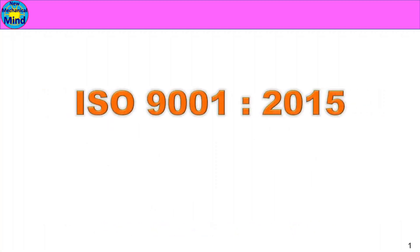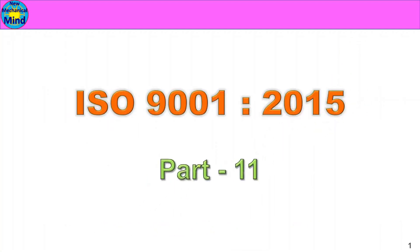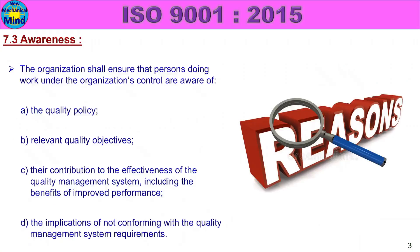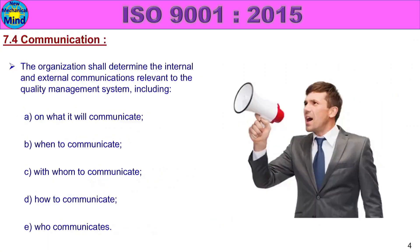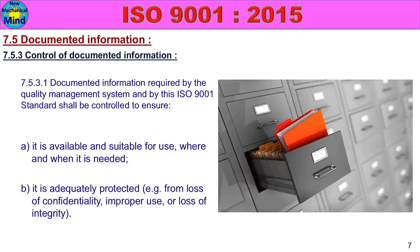In this video, we will see ISO 9001-2015 Part 11. If you want Part 10, you can click on the link. In Class 7, we will see additional subclasses: 7.2 Competence, 7.3 Awareness, 7.4 Communication, and 7.5 Documented Information. We will see all the content details.